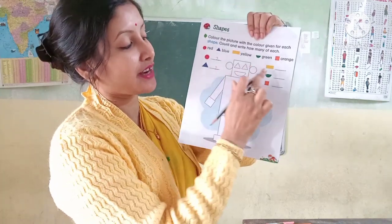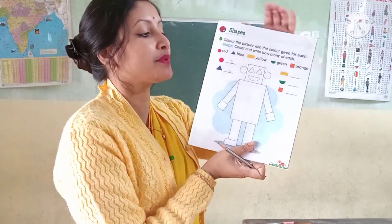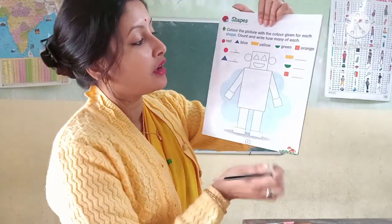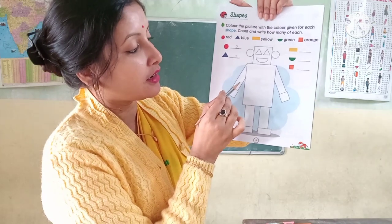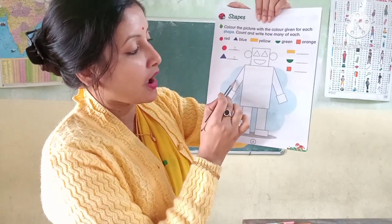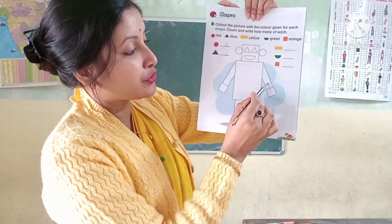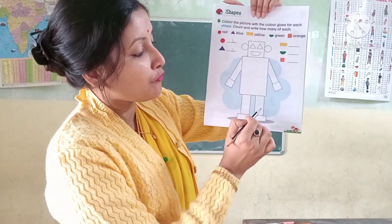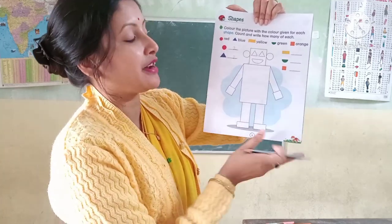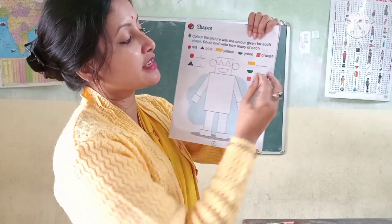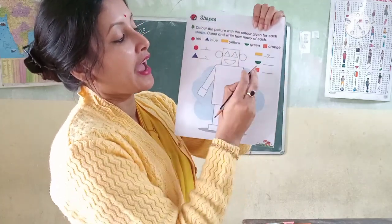Next one is rectangle. Find out how many rectangle shapes are given. One, two, three, four, five, six, seven — rectangles are seven. So write here, seven.